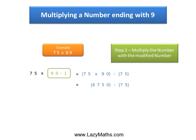6750 minus 75 gives you 6675 as the final answer. So 75 times 89 equals 6675. And that's it. Thank you.